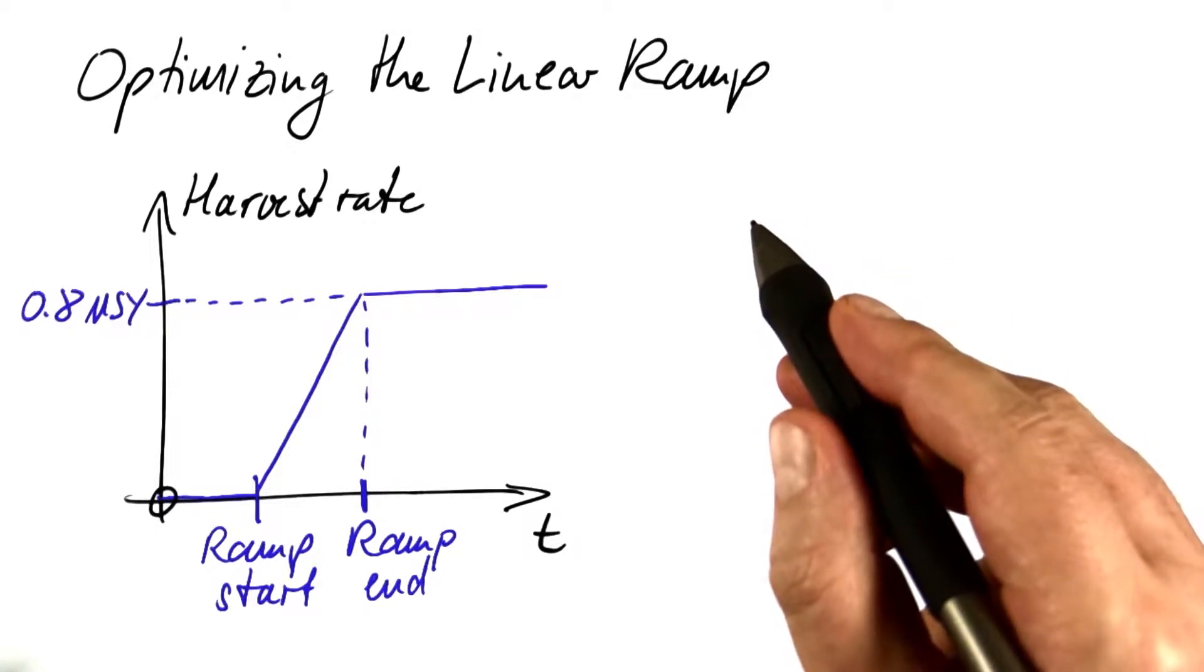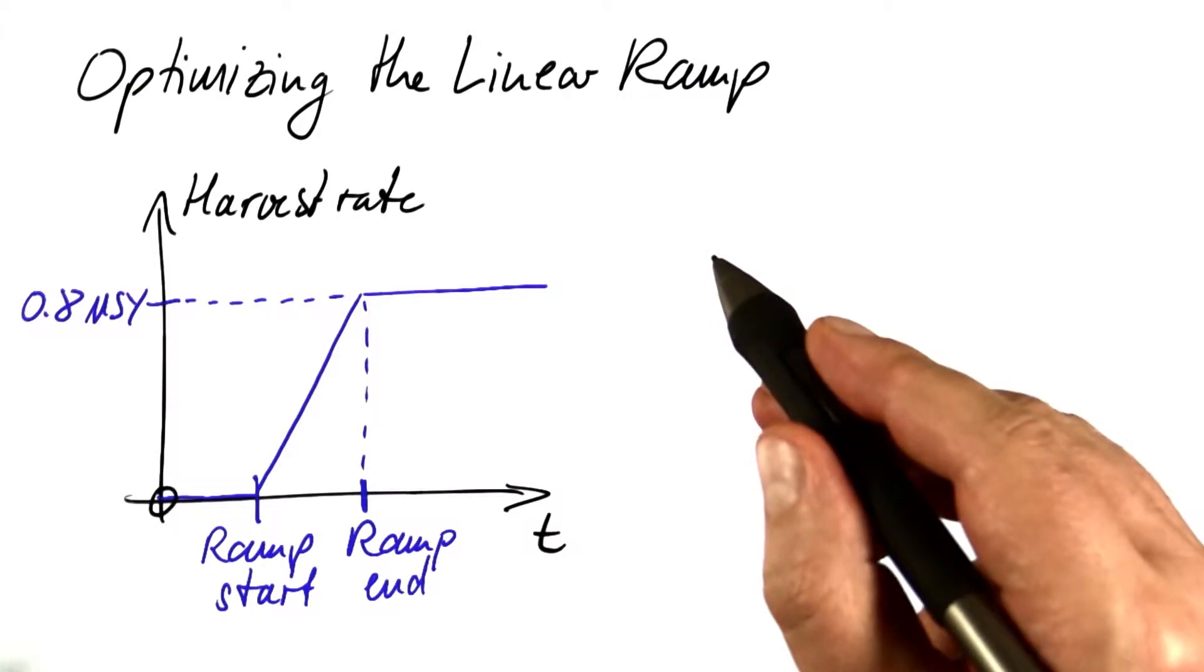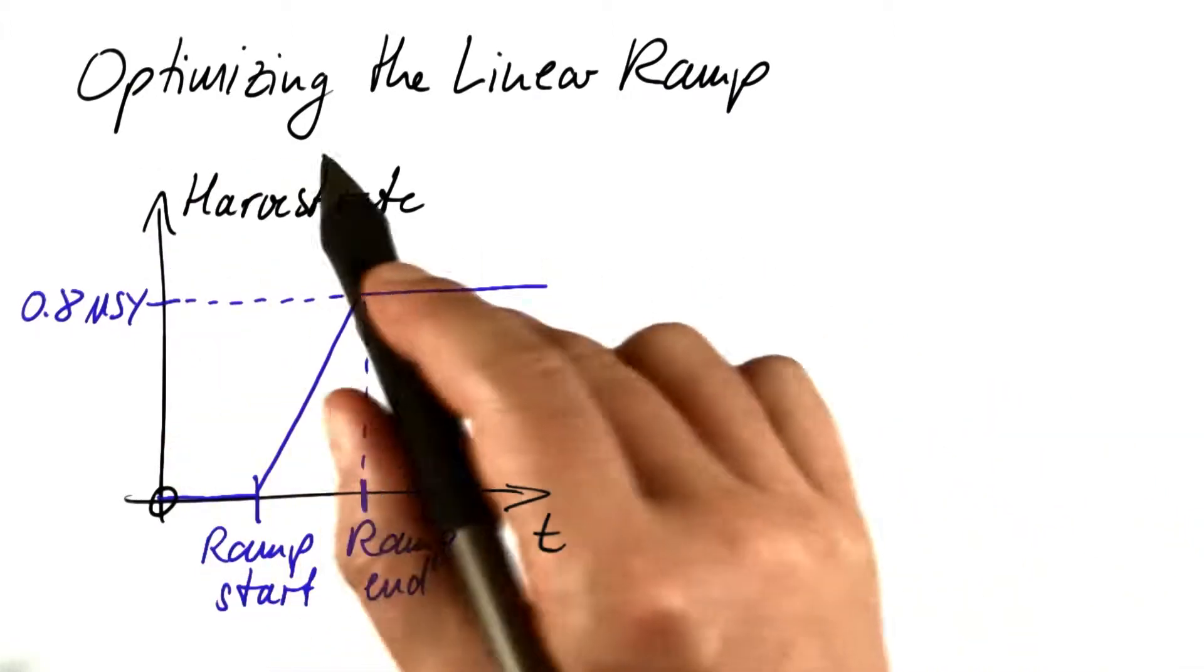Finding the best value for a single parameter is a pretty easy thing to be doing. Let's try something more difficult: optimizing the linear ramp.